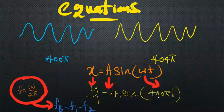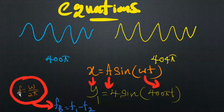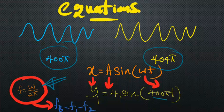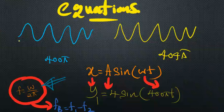We know the omega value — 400π for the first wave and 404π for the second wave. You should know the equation to find frequency from omega: f = ω / 2π. Applying this, the frequency of the first wave is 400π divided by 2π, which gives 200 Hz.